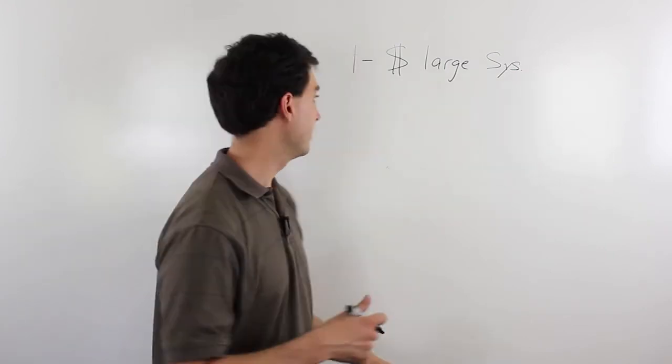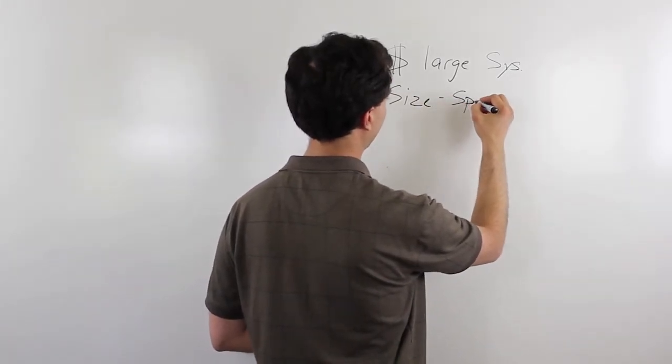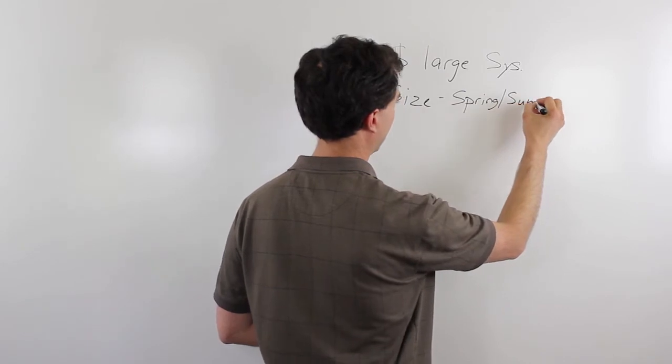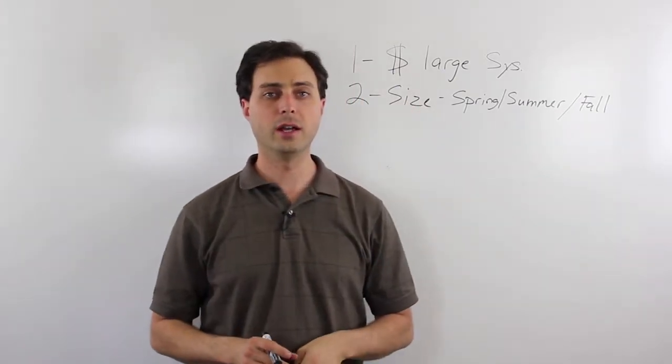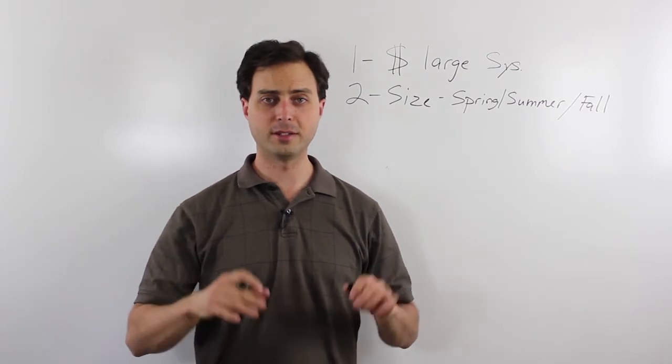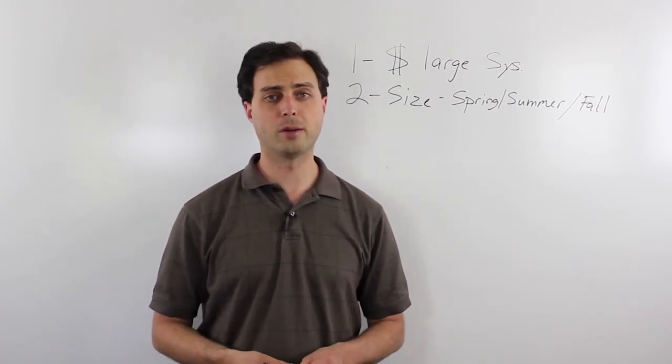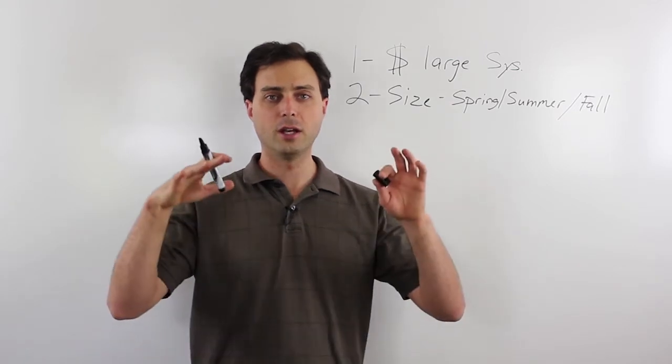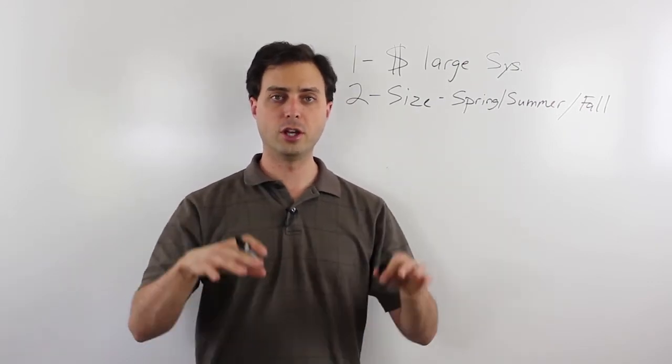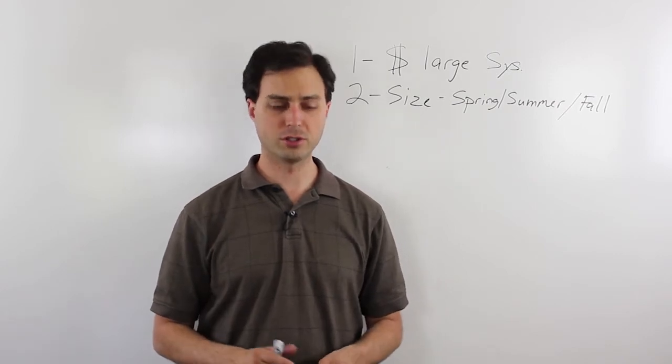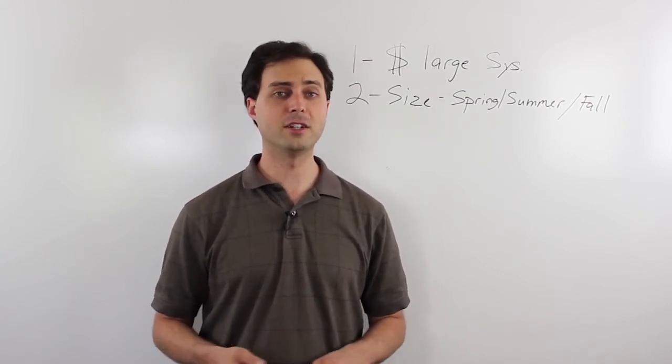Option two is where we size for spring, summer, fall. So we size our solar system to take us through the majority of the year, hopefully eight or nine months out of the year. We size it to where it will handle that on its own without any help. And then during the wintertime, we can reduce our power usage, or at least that's the theory, is that we, during those three or four months where we're not producing enough power to meet our needs, we reduce our power usage to the level at which we are able to produce with those solar panels. And that may sound like a good option in theory, but in reality, it's easier said than done.